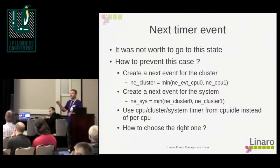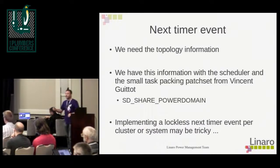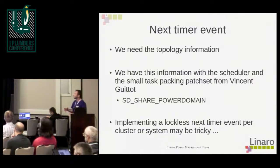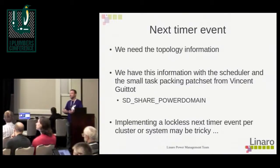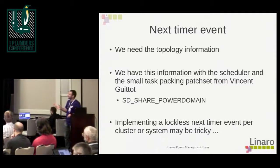From the cpuidle framework, we choose the right information using topology. Vincent's earlier presentation showed that with small task packing, a flag was introduced — the shared power domain. Also with device tree we have information about whether CPUs can be powered down independently. With this information we can feed the menu governor or another governor, so we take care of the right information instead of using per-CPU only. Creating this common information between CPUs can be tricky to implement in a lockless way, but it's just coding and thinking.